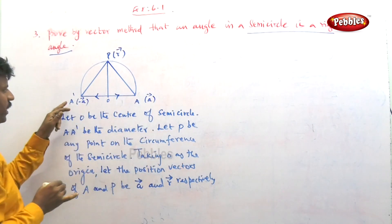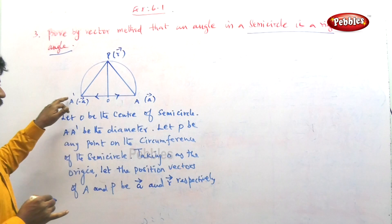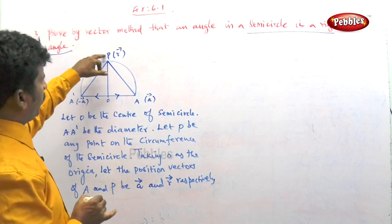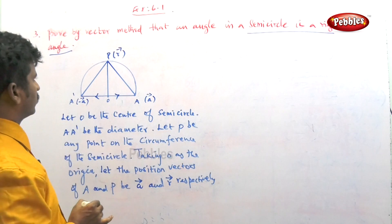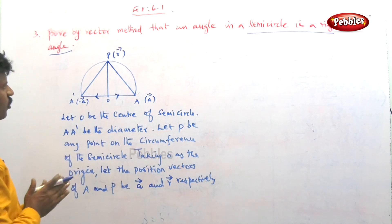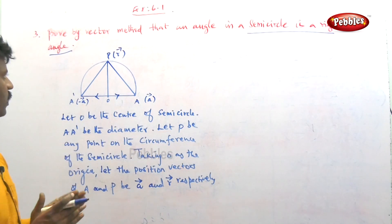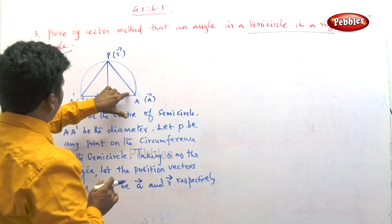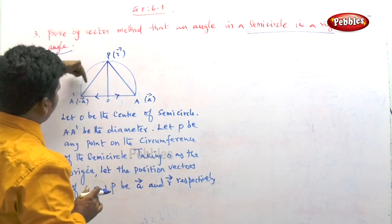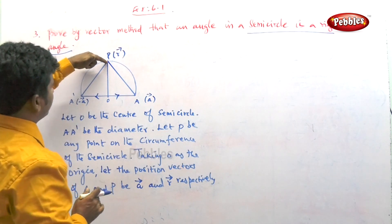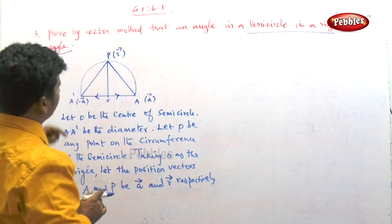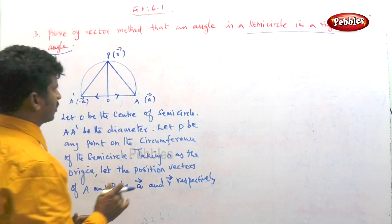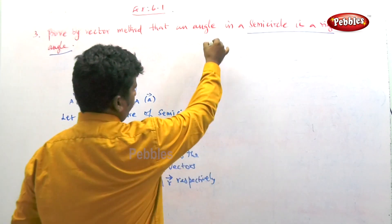So we have point P with position vector r, and A' is diametrically opposite to A. The vector A'P is what we need. We aim to show this angle is 90 degrees, i.e., π by 2.